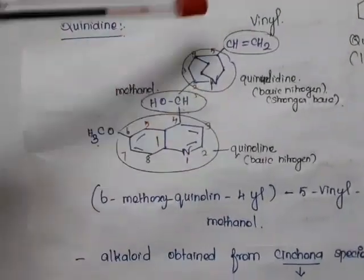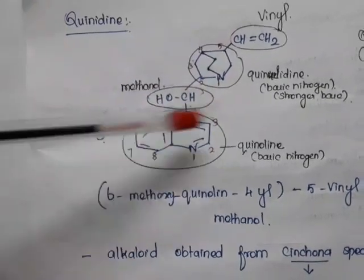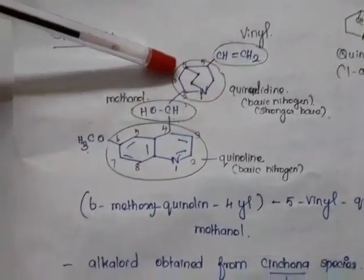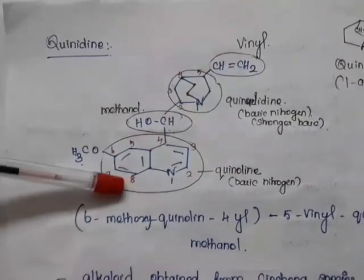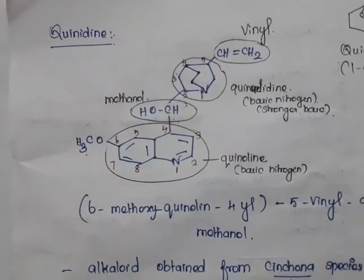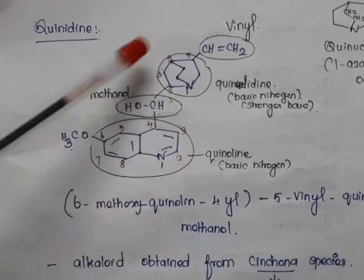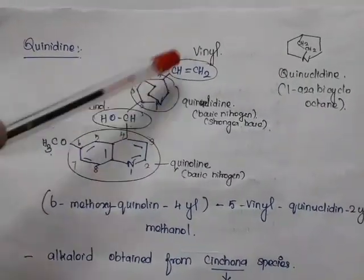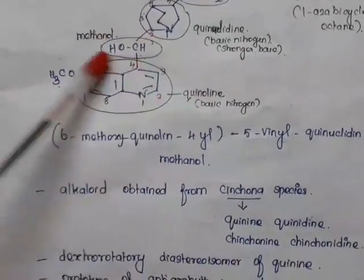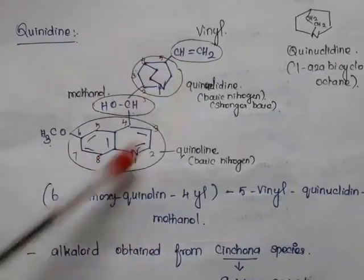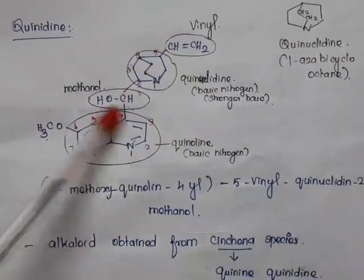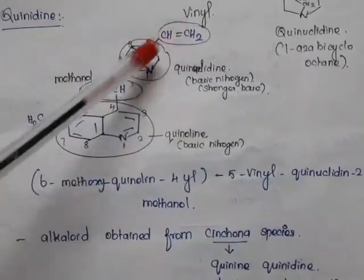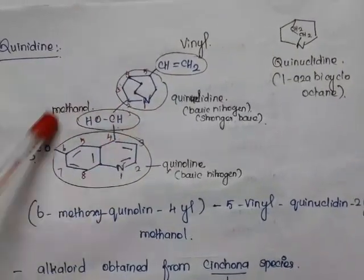Both the quinoline and quinuclidine moieties contain basic nitrogens. Comparing their basicity, quinuclidine has stronger basicity. In quinuclidine, the fifth position has a vinyl group, and the quinoline has a methoxy group at the sixth position. Taking methanol as the base for nomenclature, the chemical name is: (6-methoxyquinolin-4-yl)(5-vinylquinuclidin-2-yl)methanol.